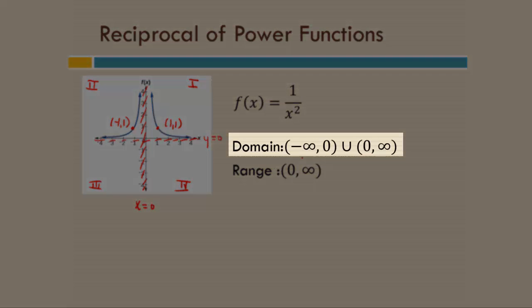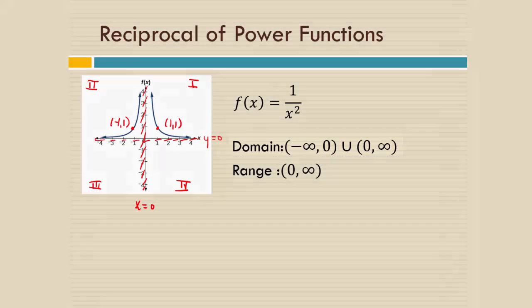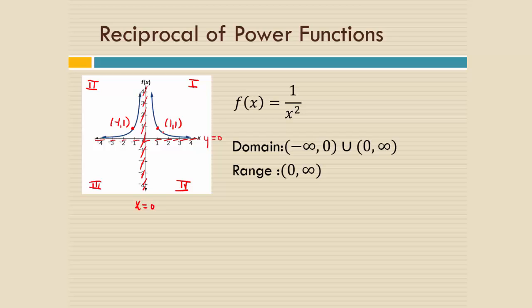Notice that the domain is everything from negative infinity to 0, not including 0, and then everything from 0 to infinity. The domain, we're allowed to plug in any x value we want except for 0 is what that's saying. And now the range is going to be 0 to infinity, not including 0 again, that's why it's parentheses, because it never actually hits the x-axis.